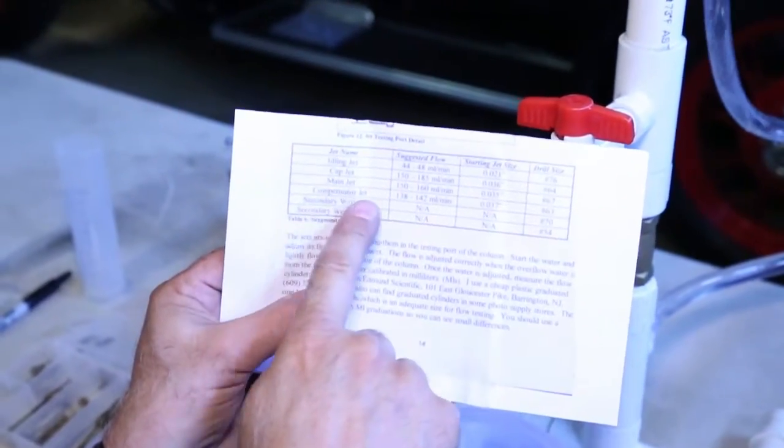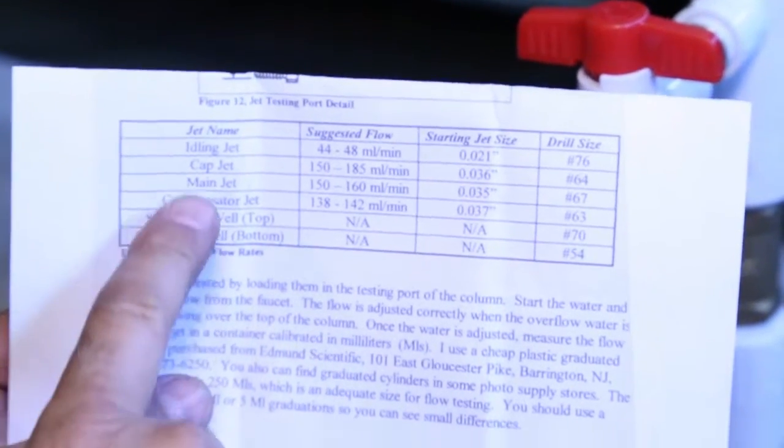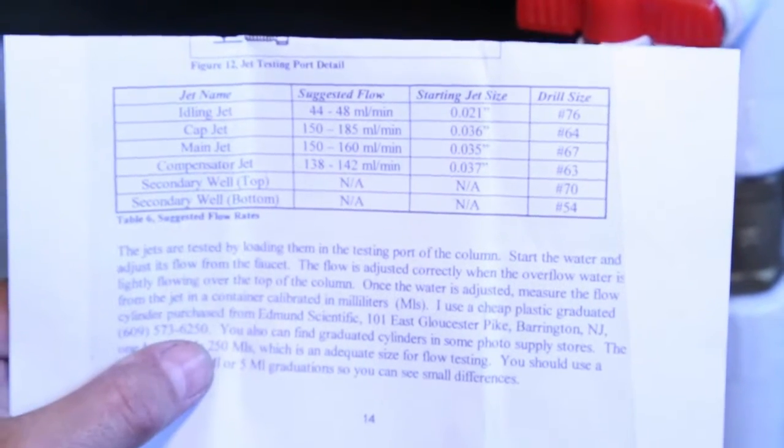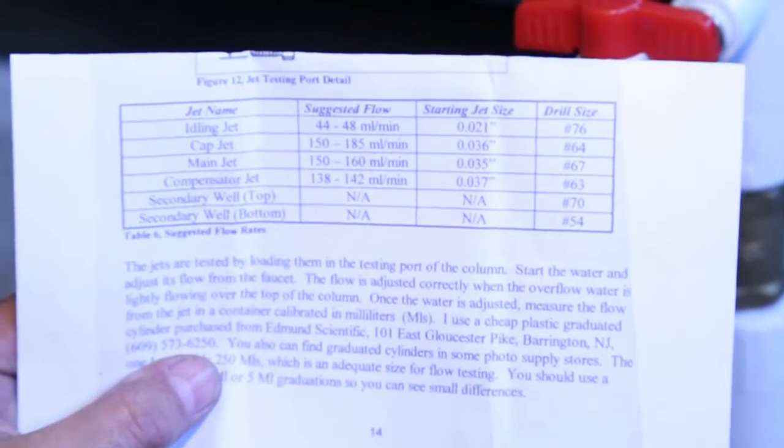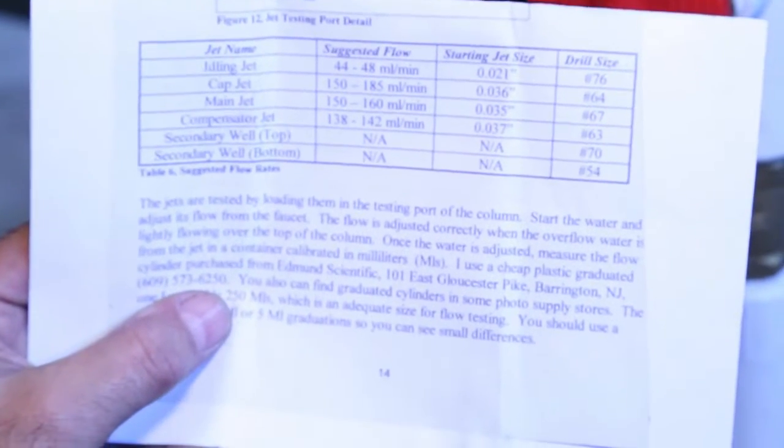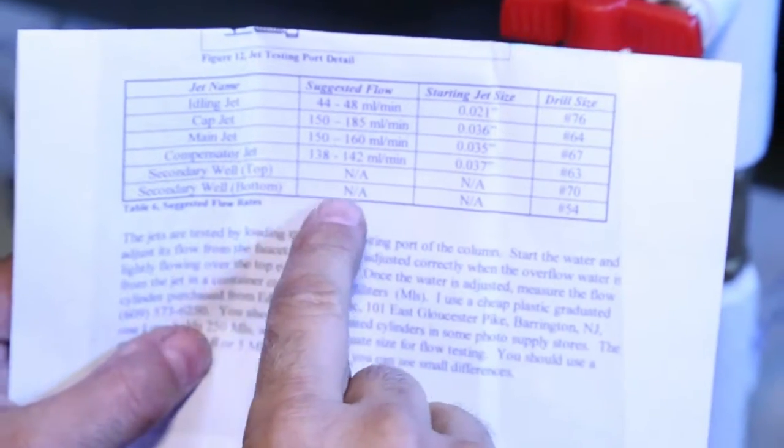The idle jet, 44 to 48. The compensator jet is 138 to 142. And this is usually what size holes drill, but what I found is sometimes you need a little bit smaller hole to actually get this flow.